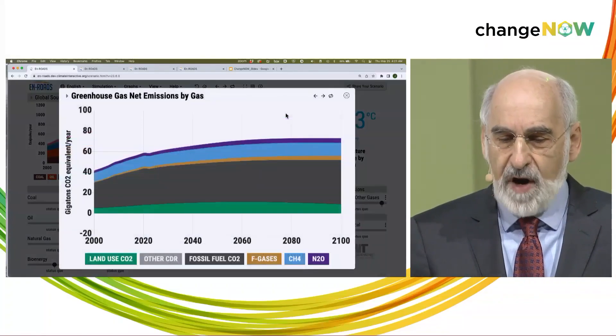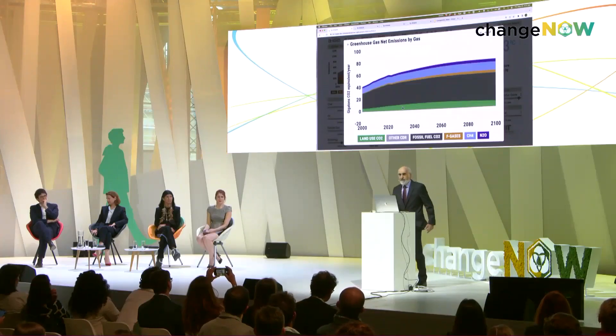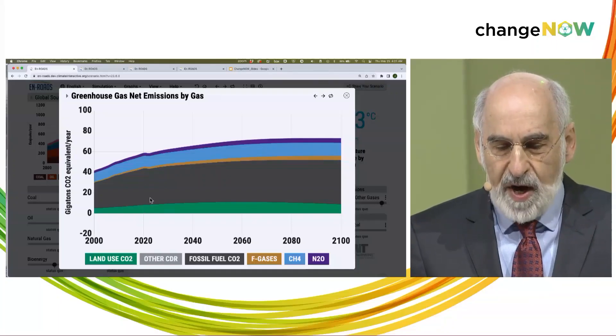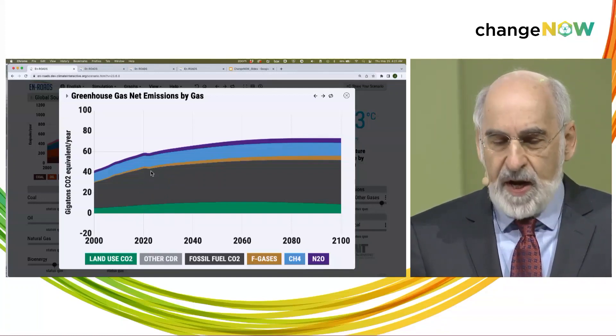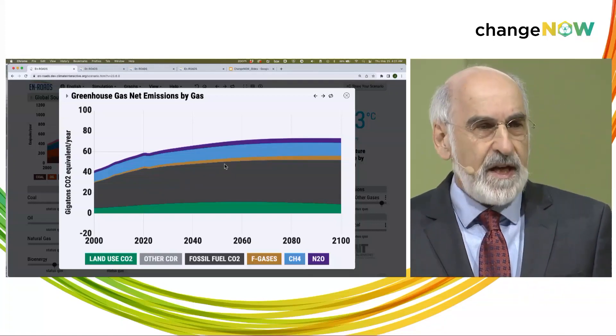This graph shows total global greenhouse gas emissions. In green at the bottom are emissions from deforestation and land degradation. By far the biggest chunk comes from burning fossil fuels — coal, oil, and gas — shown in gray. Then we have fluorinated gases: CFCs, PFCs — long-lived, potent greenhouse gases. Methane in light blue is a very potent greenhouse gas, and even more potent and long-lived is nitrous oxide at the top.